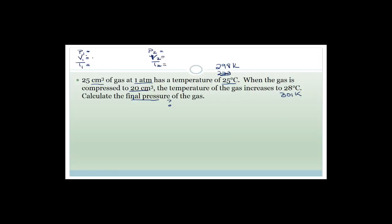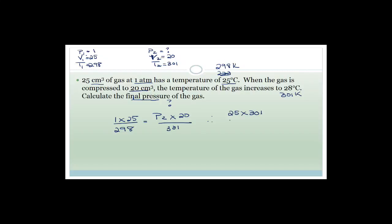The volume is 25 cubic centimetres and you don't have to change this as long as they're both in cubic centimetres. The new volume is 20. The gas has a pressure of 1 atmosphere and temperature of 298 Kelvin. The pressure we're trying to find, and the new temperature is 301 Kelvin. Substituting in: P1 is 1, V1 is 25, over T1 which is 298, equals P2 multiplied by 20, divided by 301.